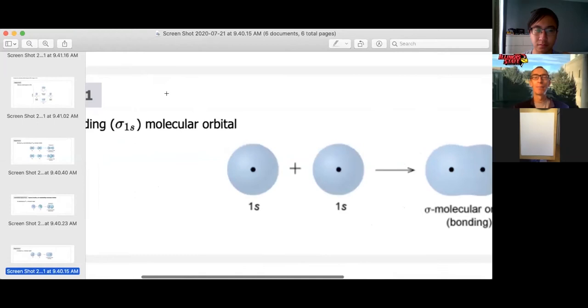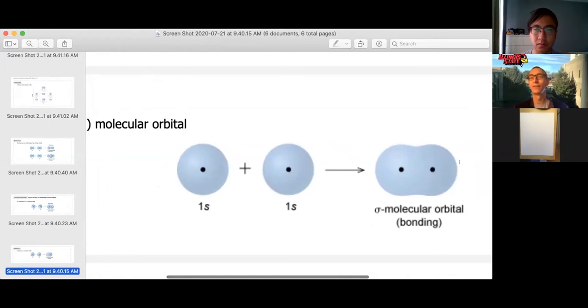Basically it is showing two 1s orbitals that come together and they overlap forming a sigma bond. And we're expected to believe that when those two orbitals overlap, in this region, in between the two orbitals, there is good possibilities and good sharing of electrons and good bonding that's formed as a result of that.